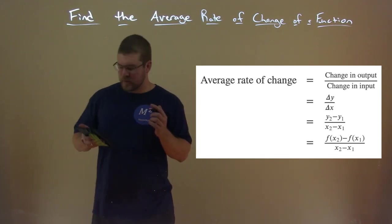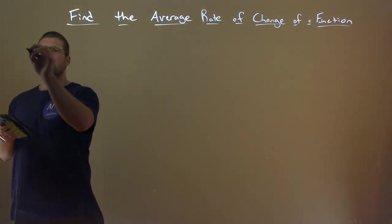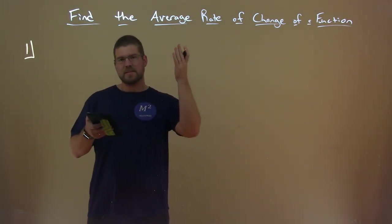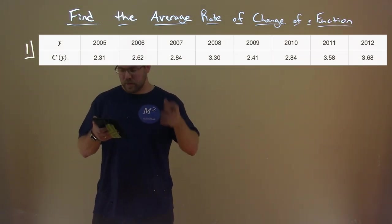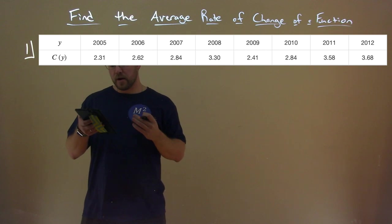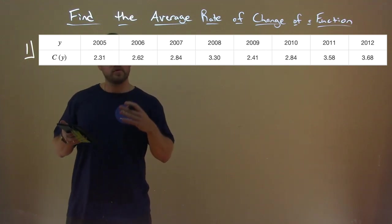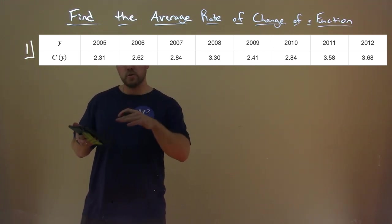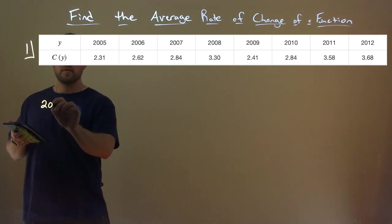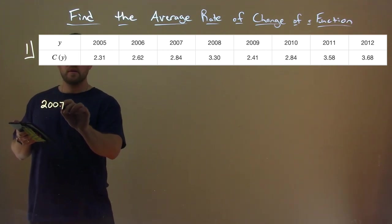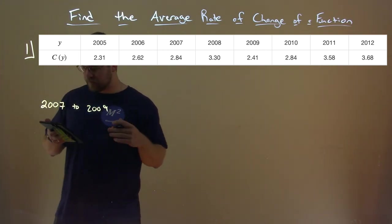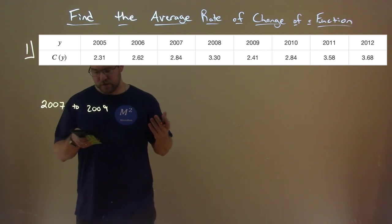Let's dive into an example. Number one — we're going to use this table, and we want to find the average rate of change of the price of gasoline between 2007 and 2009. So we're looking from 2007 to 2009. What is the average rate of change there?